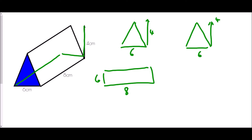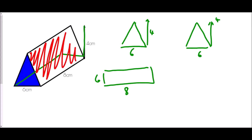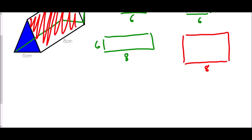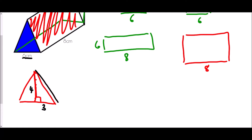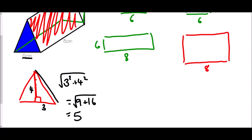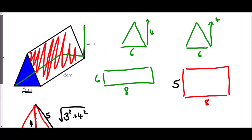We also need the slant rectangles at the front and back, but we don't know their height — we only know they are eight long. We use Pythagoras on the triangle: splitting it in half gives a base of three and a height of four. So three squared plus four squared gives the square root of 25, which is five centimeters.